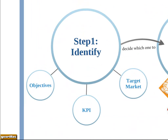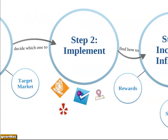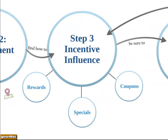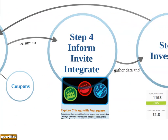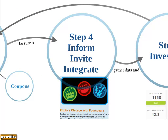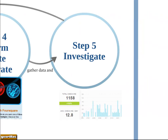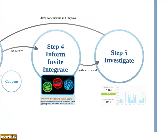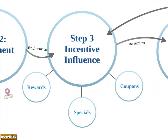Let's recap. In step one, we identify objectives, target markets, and ways to measure success. In step two, we claim your business through the different platforms. In step three, we create ways to influence prospective customers to visit your place by offering different incentives. In step four, we make sure the location-based marketing strategy is totally integrated with your marketing mix. In step five, we investigate the results, then come back to step three to continue improving your business location-based strategy.